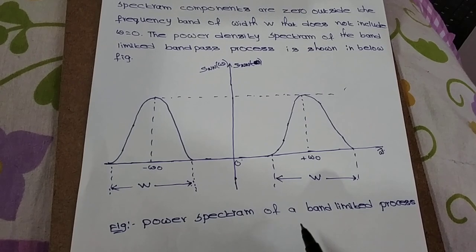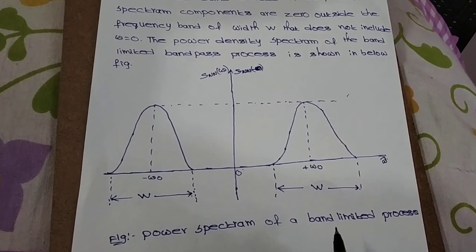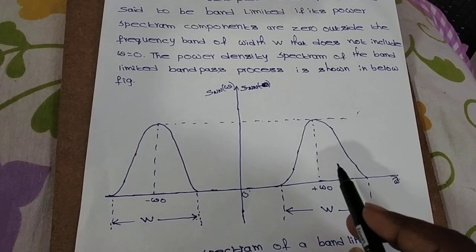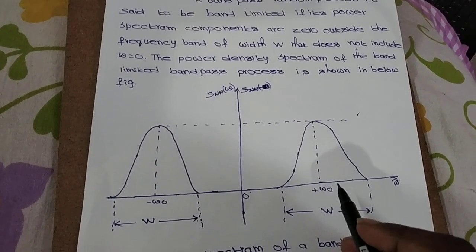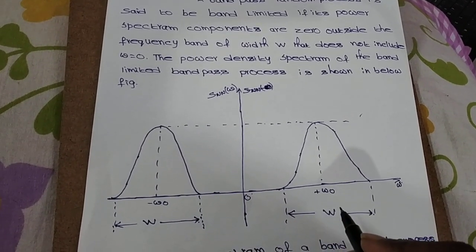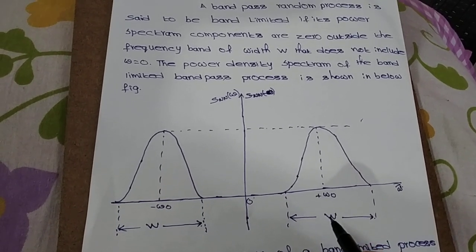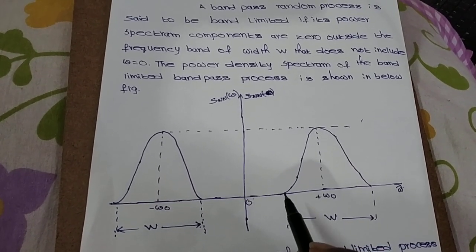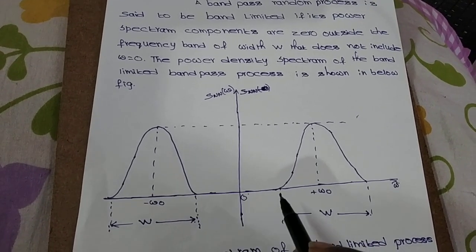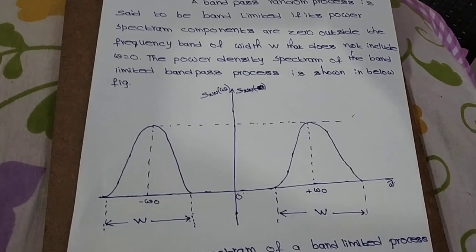This is the figure of the power spectrum of a band limited process. Outside the bandwidth, power spectral components are present only within bandwidth W. Power spectral components are completely zero at omega equal to zero. Thank you.